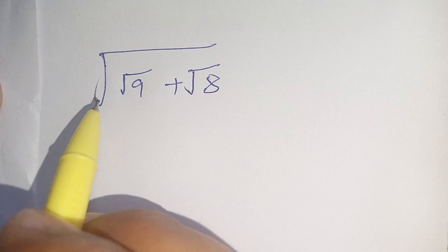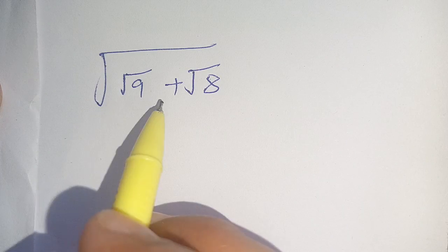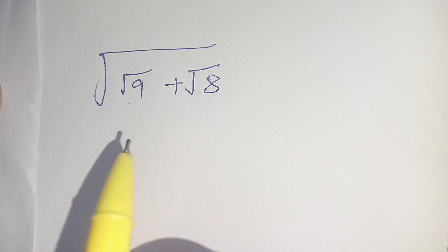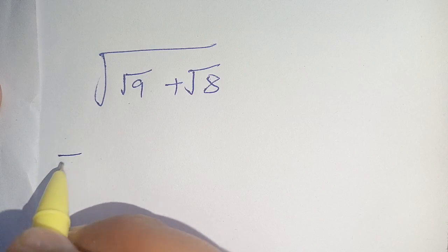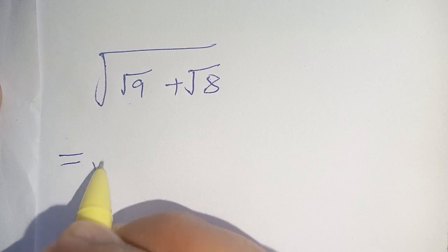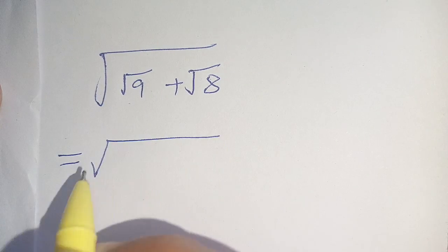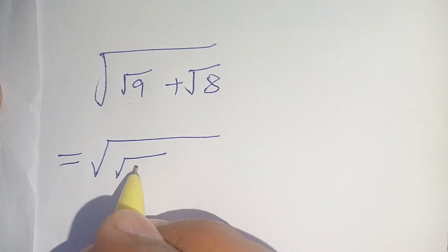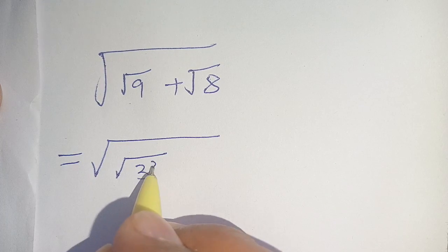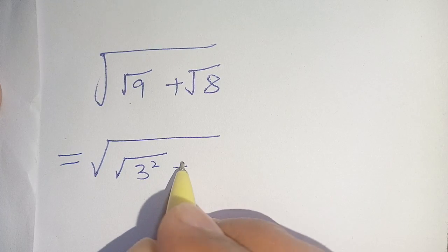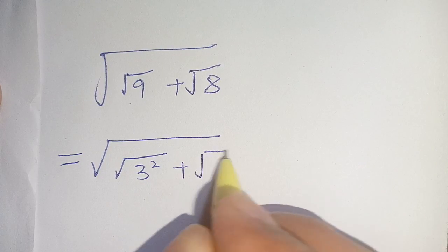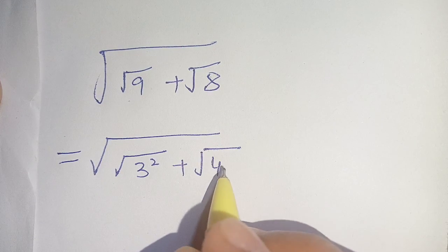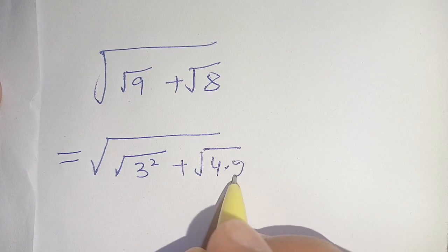How to simplify the square root of square root 9 plus square root 8. Let us solve this. We can write square root of 9 as 3 power 2, and square root of 8 can be written as 4 times 2.